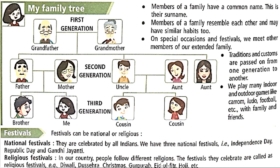Let's see a basic family tree. In a basic family tree, we have three layers. The first generation comes on top — that is our grandfather and grandmother. Then comes the second generation — that is father, mother, uncle and aunts. And then comes the third generation — that is us: brother, me, cousins. For Class 2 questions, you need to understand first, second and third generation.